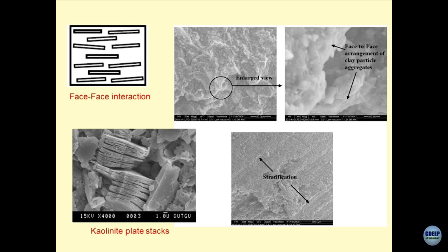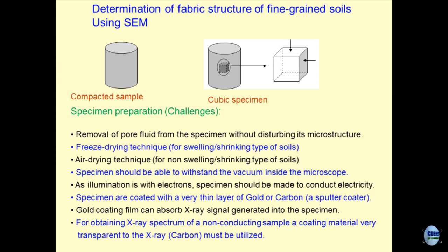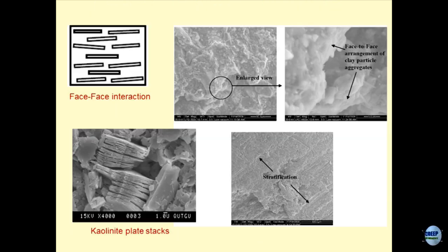What we have done is: this is the triaxial sample, from which we have taken out a specimen — 1 centimeter cube — which has all the attributes of the triaxial sample. What you are seeing at the microstructure level is what is known as the fabric of the clays. Number one: the type of particles; their arrangement; and number three: what is the texture they are giving.